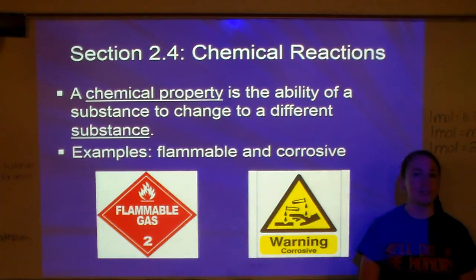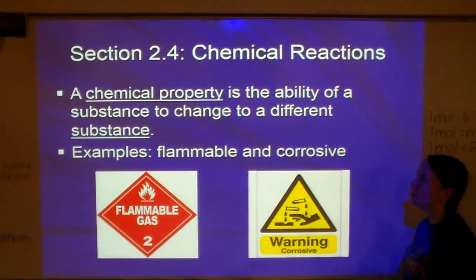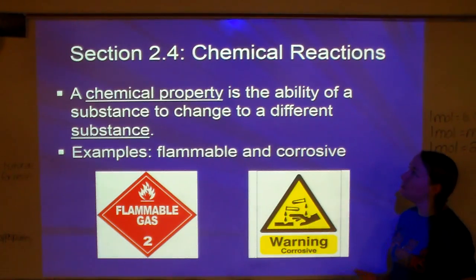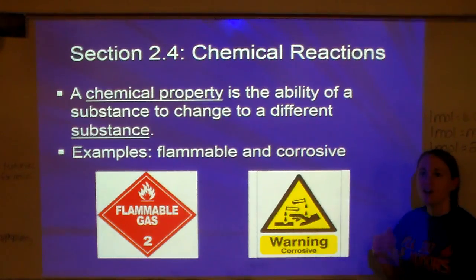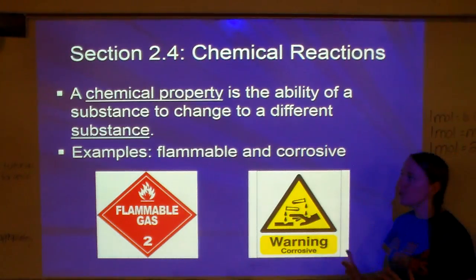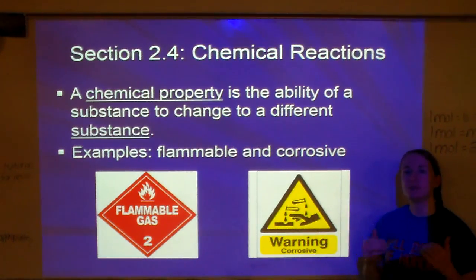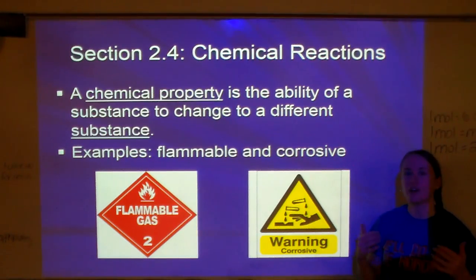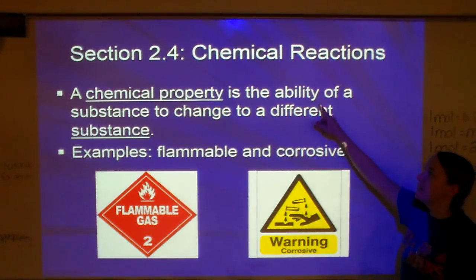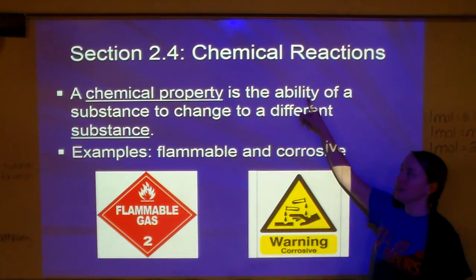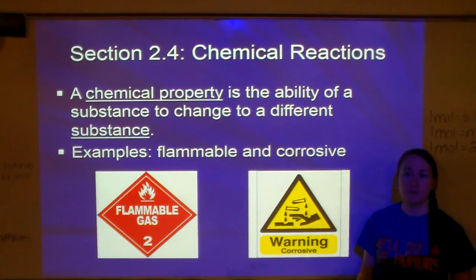That's one of the reasons I love chemistry so much — the chemical reactions we get to see. A chemical property is the ability of a substance to change to a different substance. Physical properties are things we can observe without changing the substance — like saying my shirt is blue. A chemical property, on the other hand, is the ability to change it into a different substance.